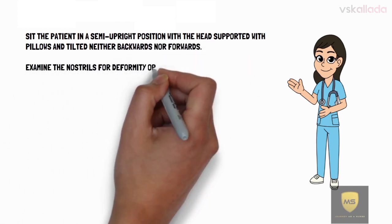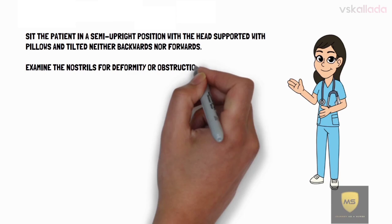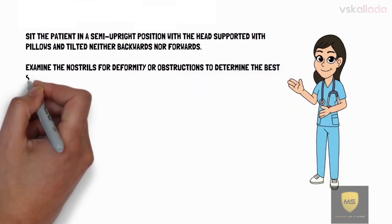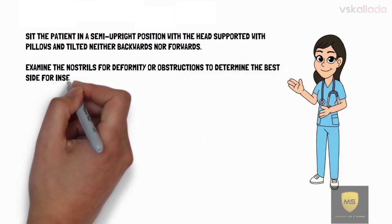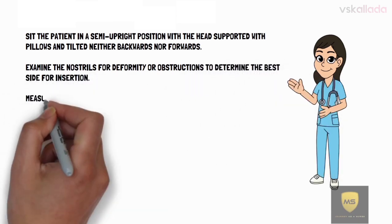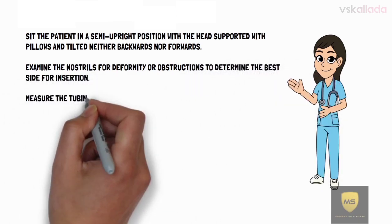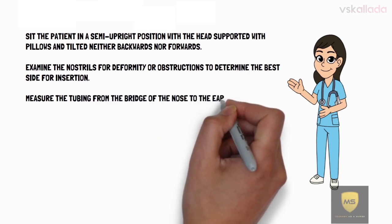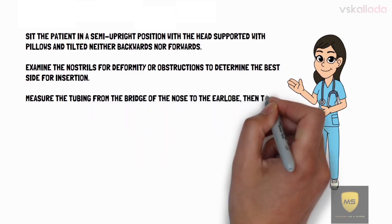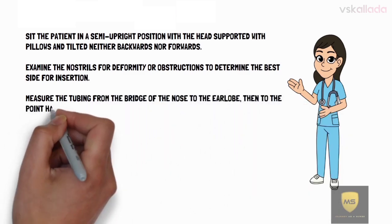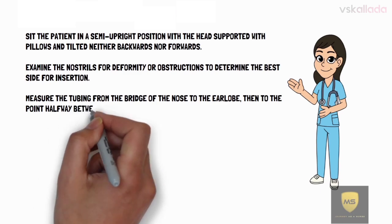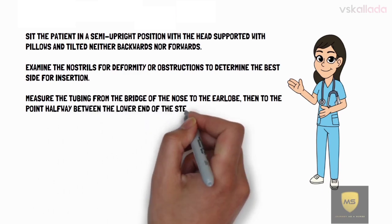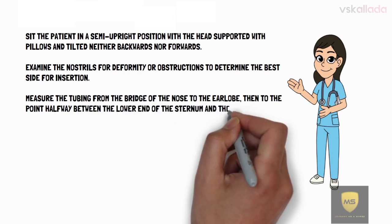Examine the nostrils for deformity or obstructions to determine the better side for insertion. Measure the tubing from the bridge of the nose to the earlobe, then to the point halfway between the lower end of the sternum and the navel.